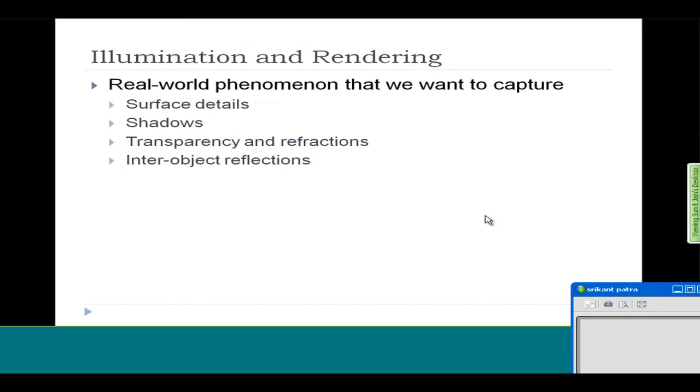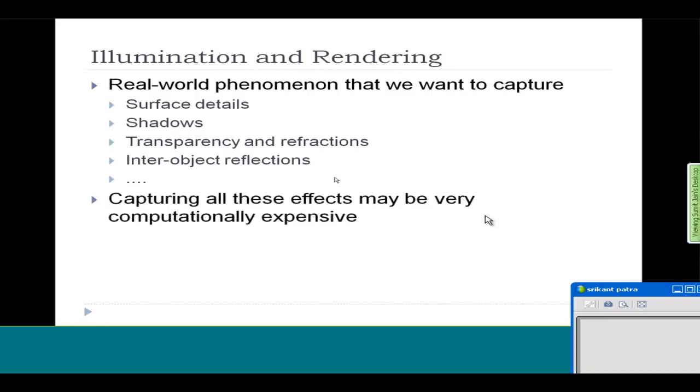There are inter-object reflections, which means objects can reflect onto each other. For example, a mirror can reflect everything perfectly, but a shiny object like a spoon or steel plate will reflect something. Capturing all these effects may be very computationally expensive. Different algorithms are devised to capture at least some of these effects.